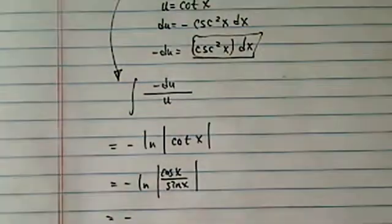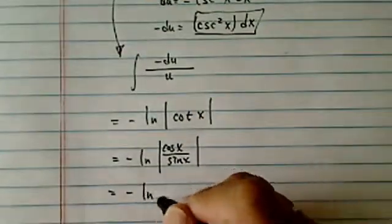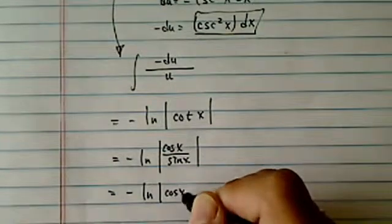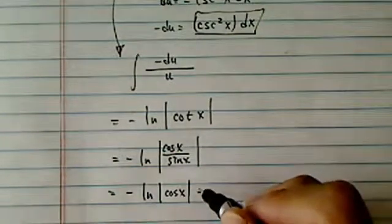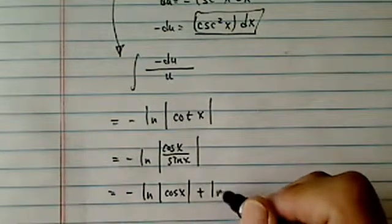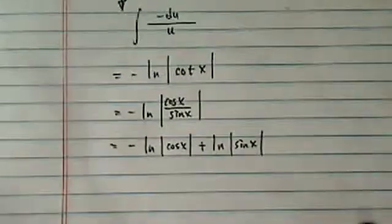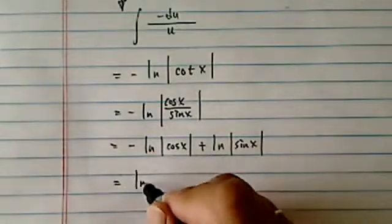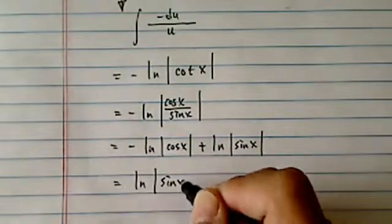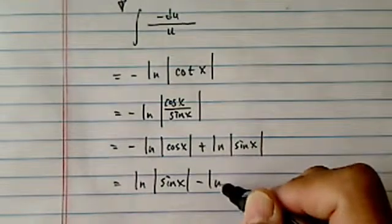So we have minus natural log of cosine of x minus minus, which is plus, natural log of sine x. Maybe we can make it look a little prettier, and we're just going to swap the two.